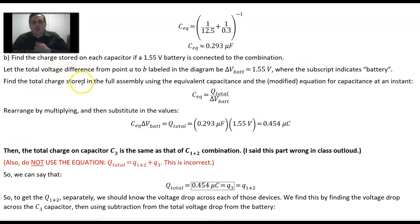The reason we added those capacitors together as if they were a single capacitor is because we can find the total charge stored in the combination. The equivalent capacitance is equal to the total charge divided by the total voltage difference. The equivalent capacitance times the delta V of the battery is the total charge. That's 0.293 microfarads times 1.55 volts is 0.454 microcoulombs.